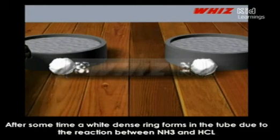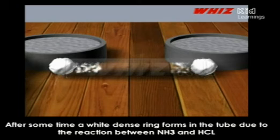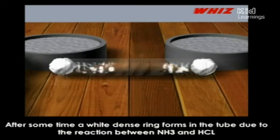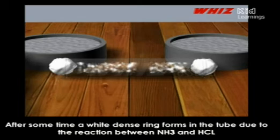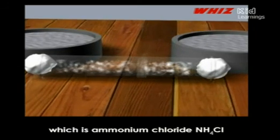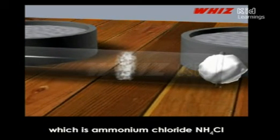After some time, a wide dense ring forms in the tube due to the reaction between NH3 and HCl, which is ammonium chloride NH4Cl.